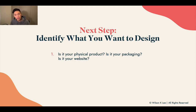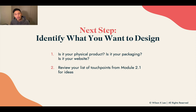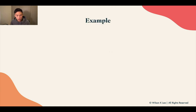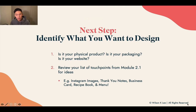The next step is to identify what you want to design and what you need to design. Is it your physical product? Is it your packaging? Or is it your website? Review the list of touch points from module 2.1 for ideas of items that you need to design. So depending on what you have to offer, you might be designing thank you cards, Instagram images, business cards, recipe books, menus, and so on. I can't give you a full list mainly because every business and every food concept might be a little bit different, but these are the general items that you may want to design.